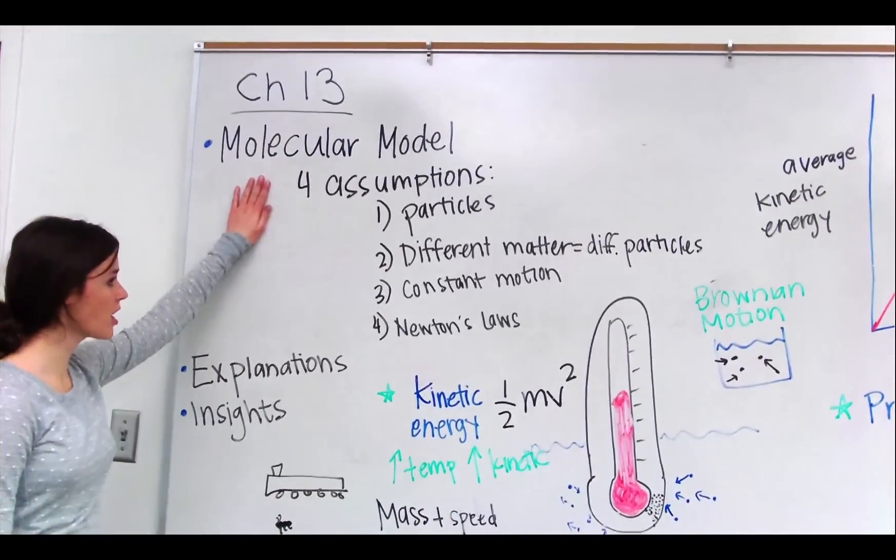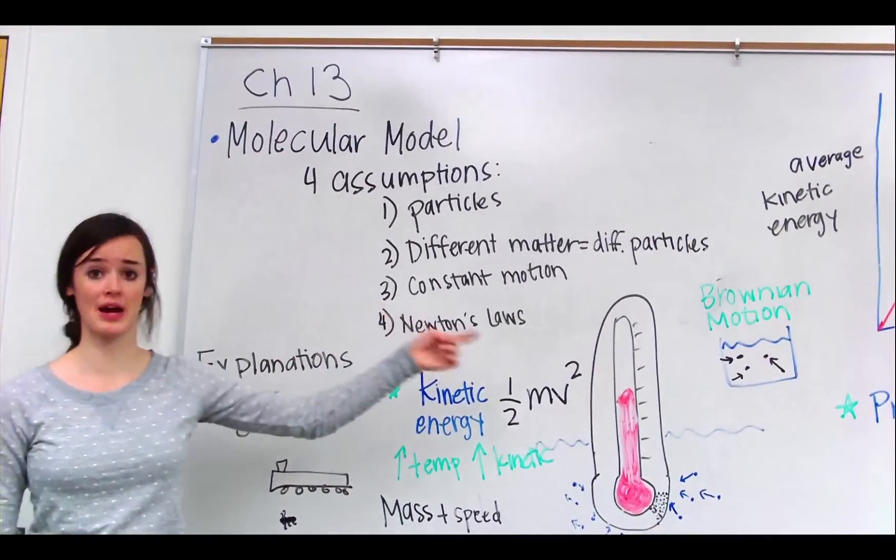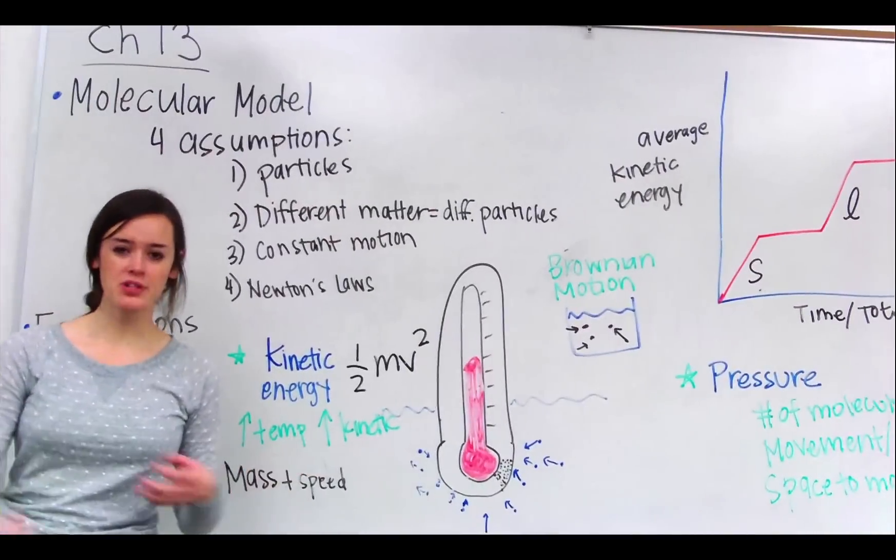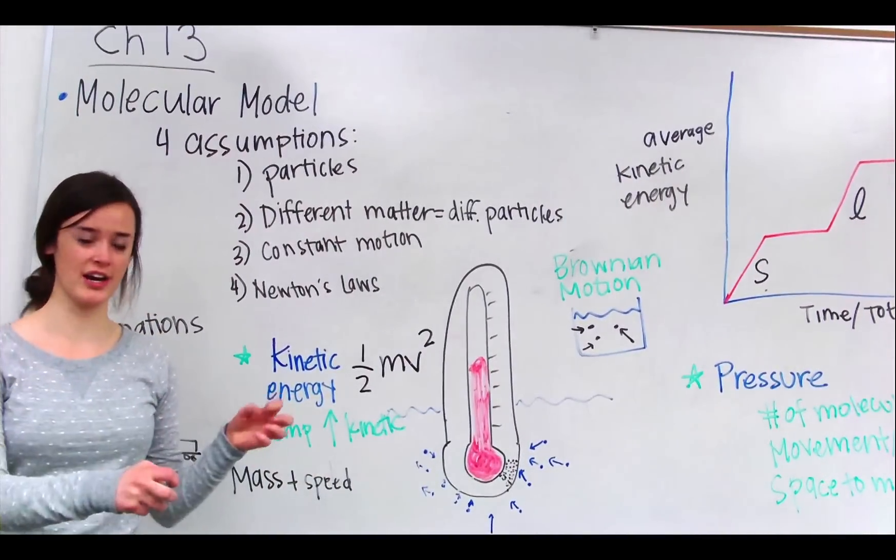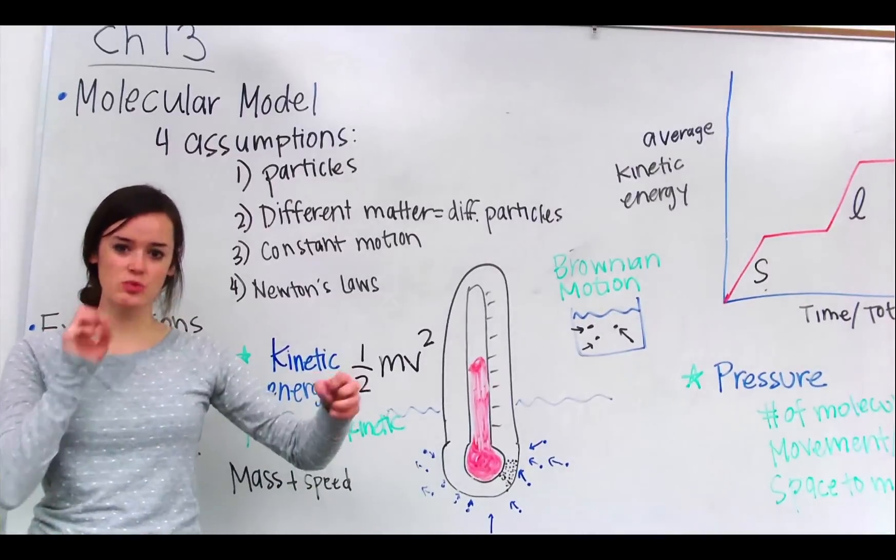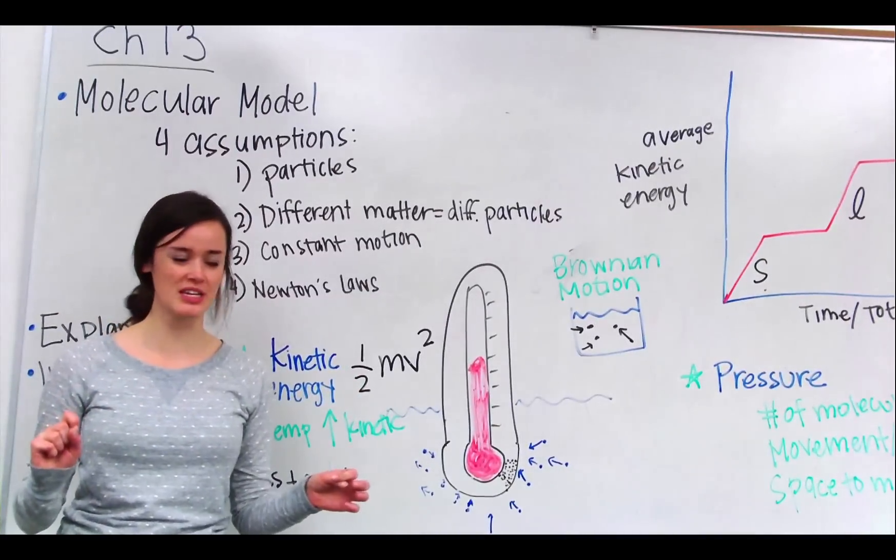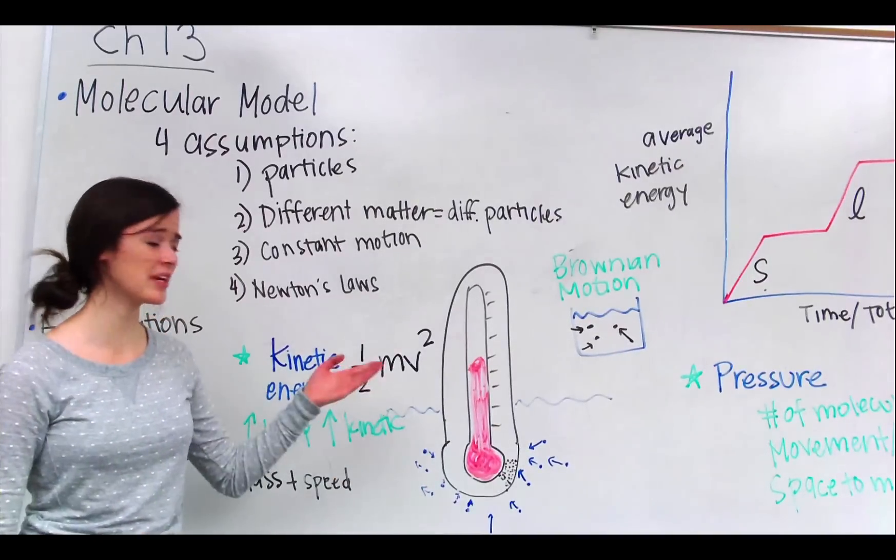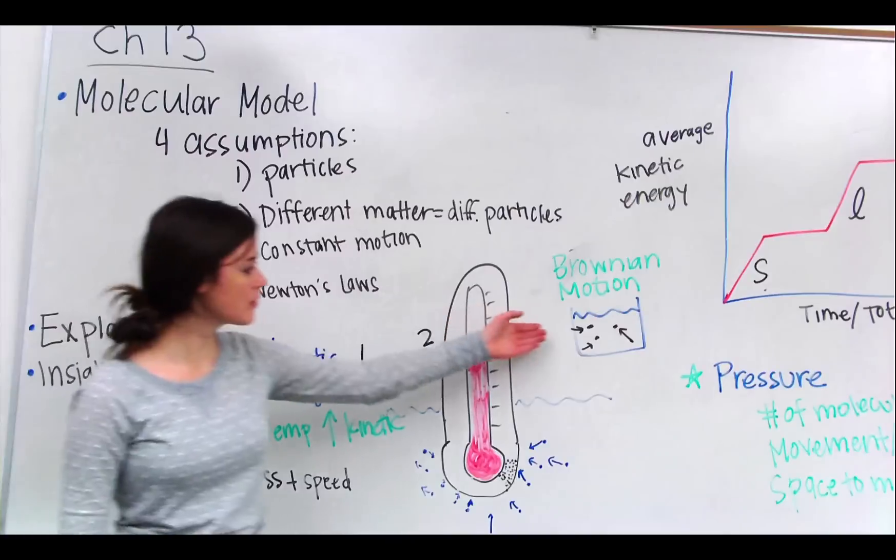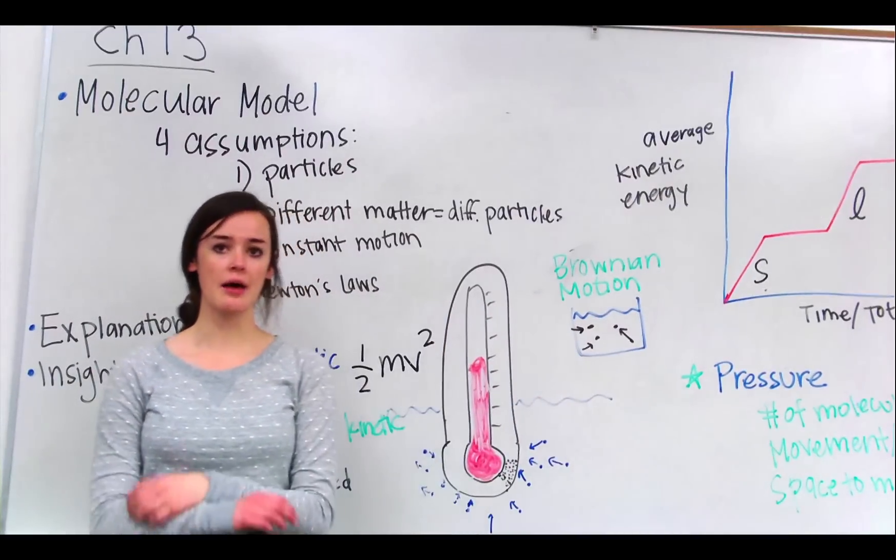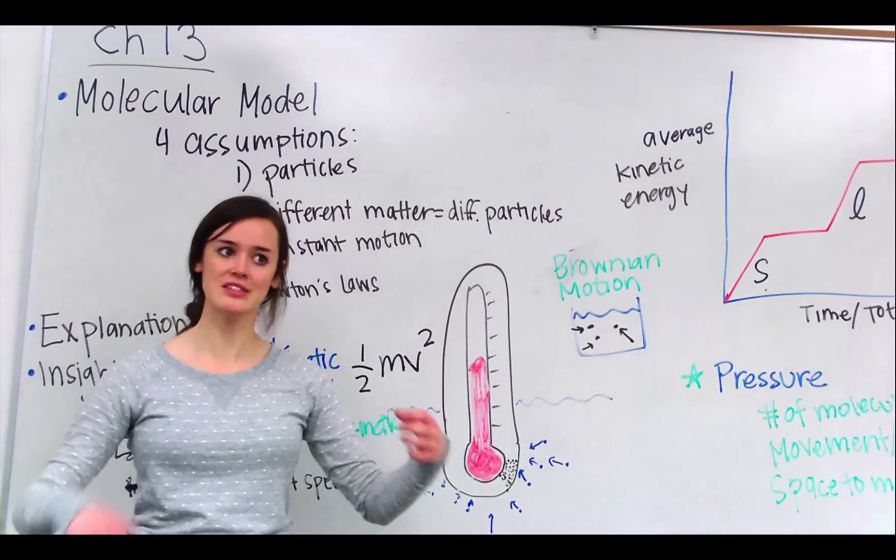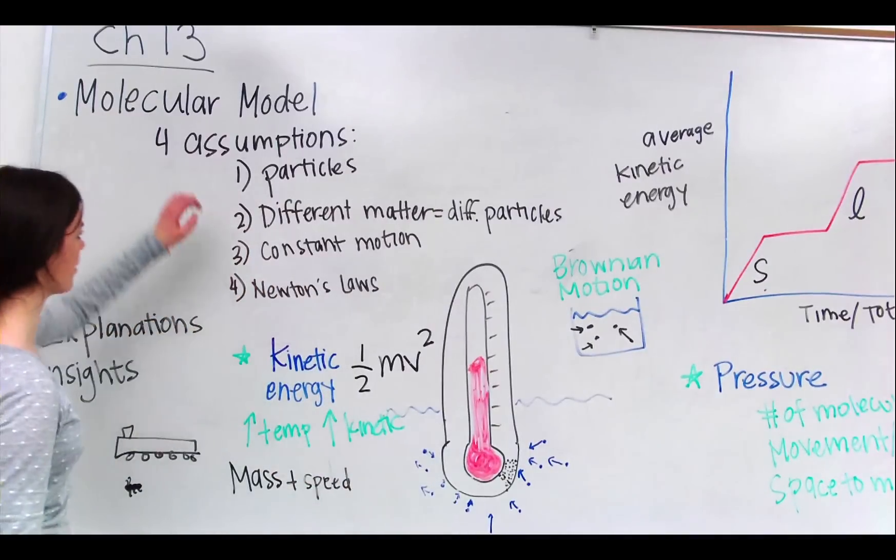All right, so the molecular model helps to explain something called Brownian motion. So one time, this scientist named Robert Brown put some pollen grains in some water, and he noticed that these grains would sometimes just twitch for some reason with no real explanation to the twitching. This led him to discover that molecules make up everything, and the reason those were moving is because they were molecules or made of molecules.